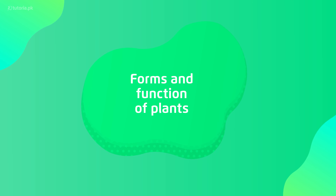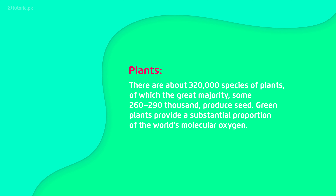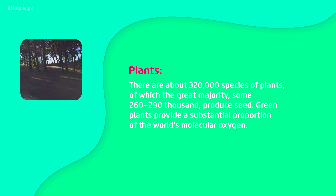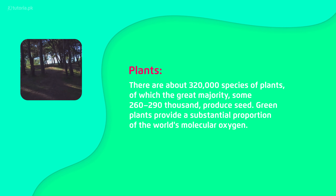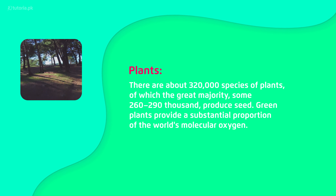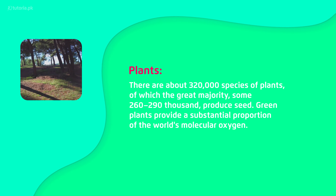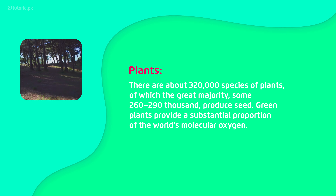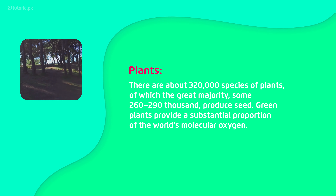Hello students, assalamu alaikum. This is Laiva Tariq, your biology instructor from tutorial.pk. Today we are discussing chapter 10 of your book, that is the forms and functions of the plant. Our Earth has 320,000 species of different plants and they produce more than 200,000 plant seeds.